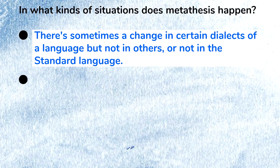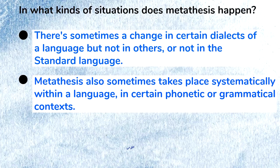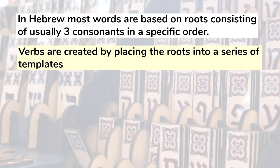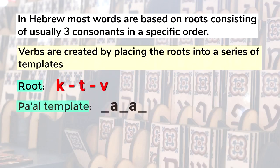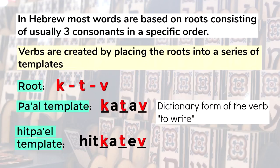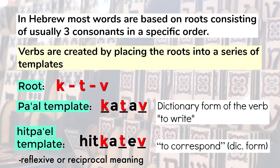Fourth, metathesis also sometimes takes place systematically within a language, in certain phonetic or grammatical contexts. One example comes from Hebrew. In Hebrew, most words are based on roots consisting of usually three consonants in a specific order. Verbs are created by placing the roots into a series of templates that shape the meaning of the root. A typical example: the root is k-t-v. The first template is the pa'al form, 'katav' — that's the dictionary form of the verb 'to write'. The key template is the hitpa'el template, 'hitkatev', meaning 'to correspond', as in by written letters in the old days. The hitpa'el template often gives the root reflexive or reciprocal meaning — doing the action together with someone else.